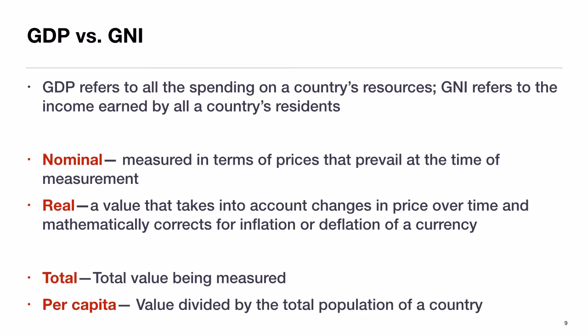Another example: Toyota products manufactured and sold in the United States count toward U.S. GDP. However, the income of a Japanese manager at a Toyota plant in the United States would count back towards Japan's GNI.